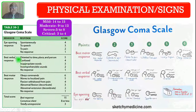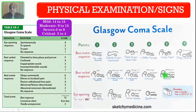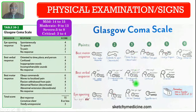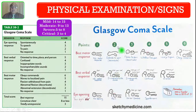The next component is best verbal response. If the patient is oriented to time, place, and person, the score is 5. If confused, the score is 4. Uttering inappropriate words scores 3. Uttering incomprehensible sounds scores 2. No response scores 1.